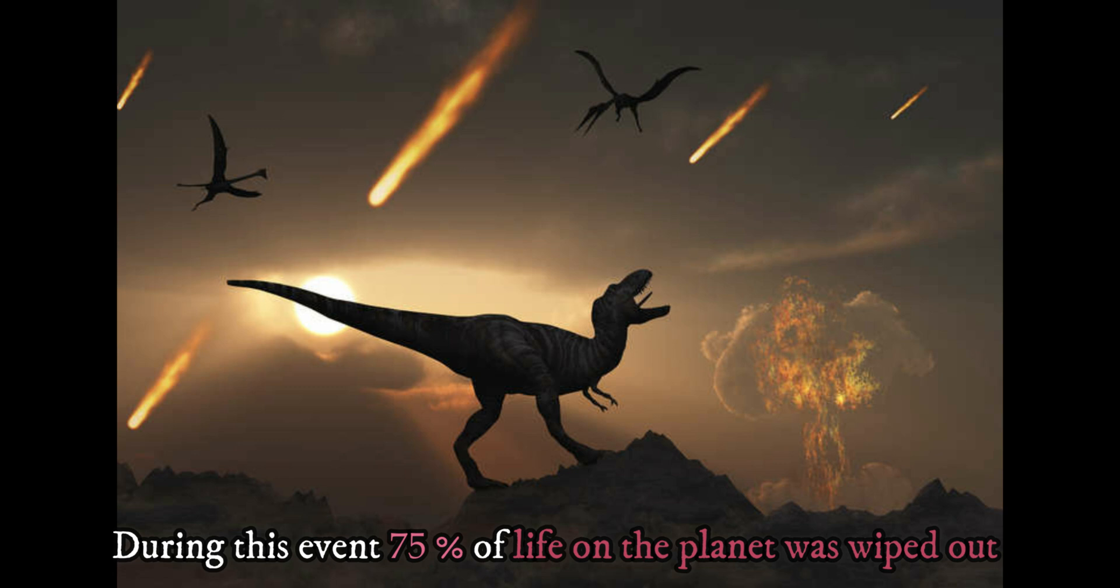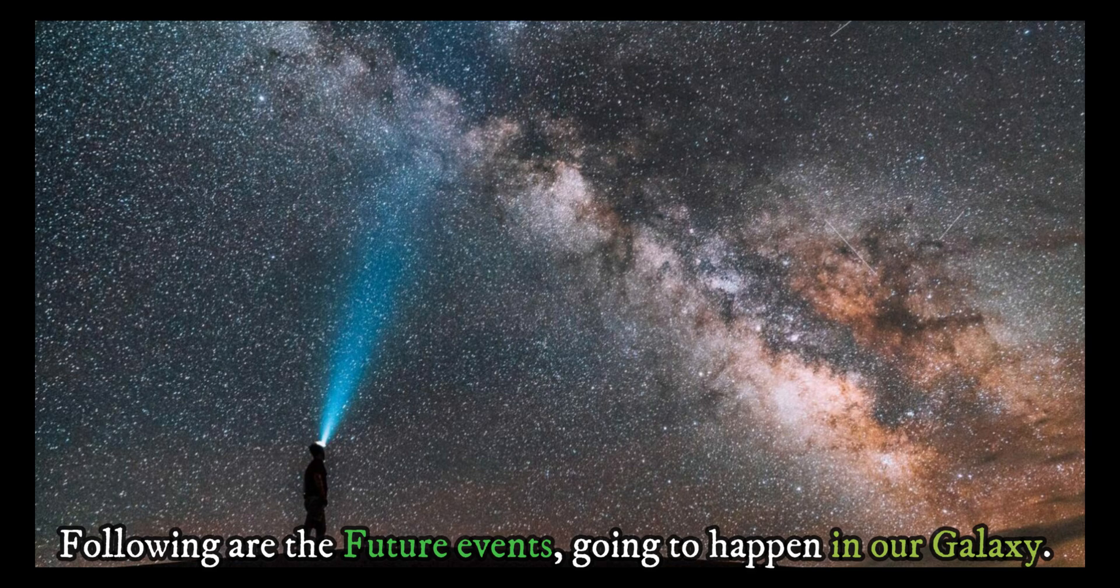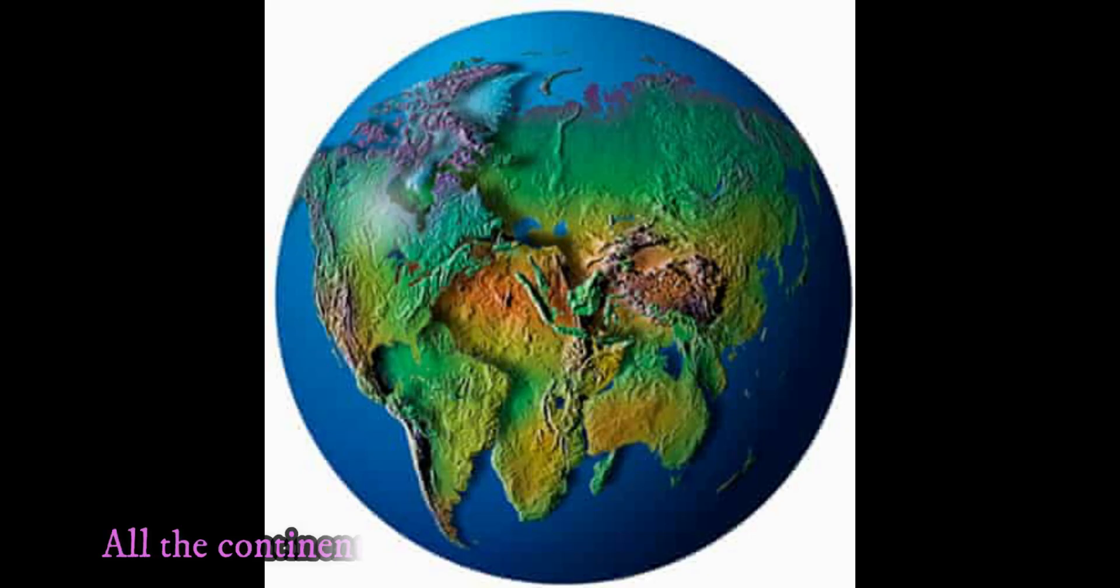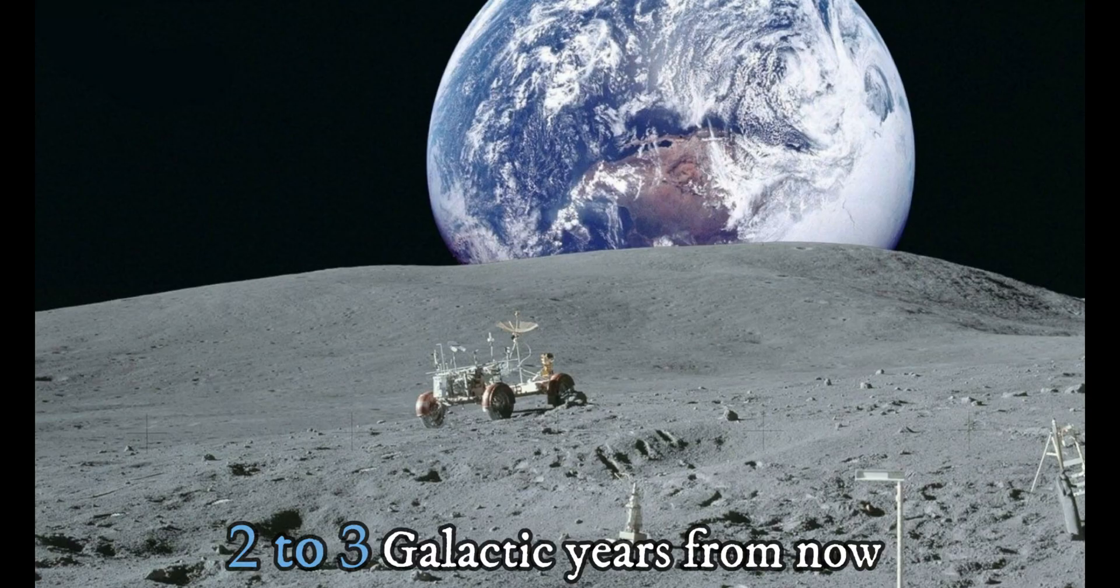Following are the future events going to happen in our galaxy. One galactic year from now, all the continents on Earth may fuse into a supercontinent. Two to three galactic years from now, tidal acceleration moves the Moon far enough from Earth that total solar eclipses are no longer possible.